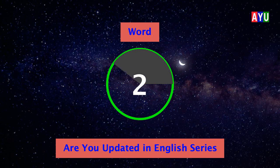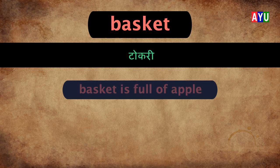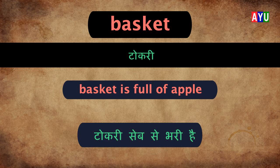Second word: Basket. Basket means Tokri. Let's see one example — Basket is full of apple. Tokri sep se bhari hai.